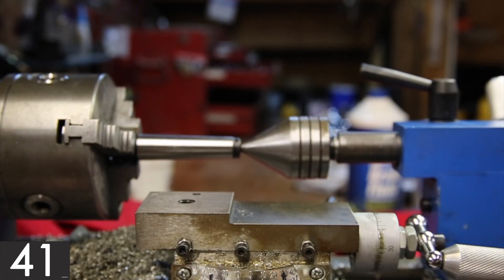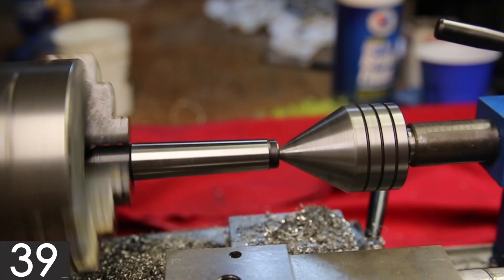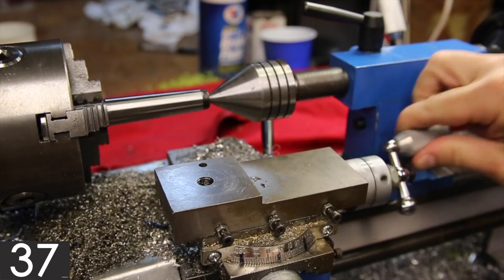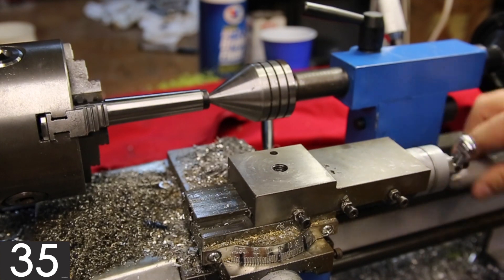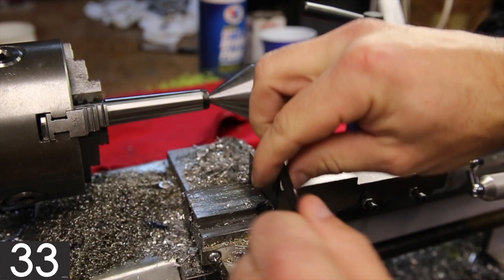Next, mount it in the chuck. Steady it with the live center and the tailstock, do a quick sanity check to make sure it's not wobbling around, and now we can get to setting the angle by loosening the compound slide.